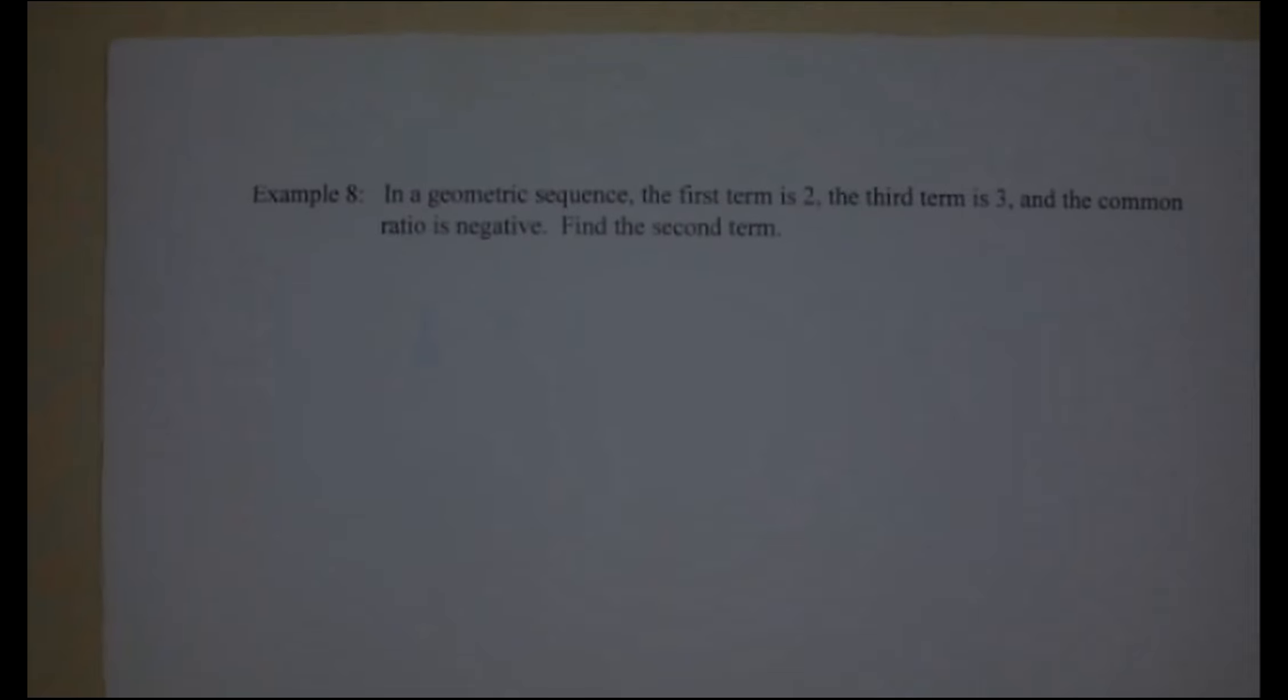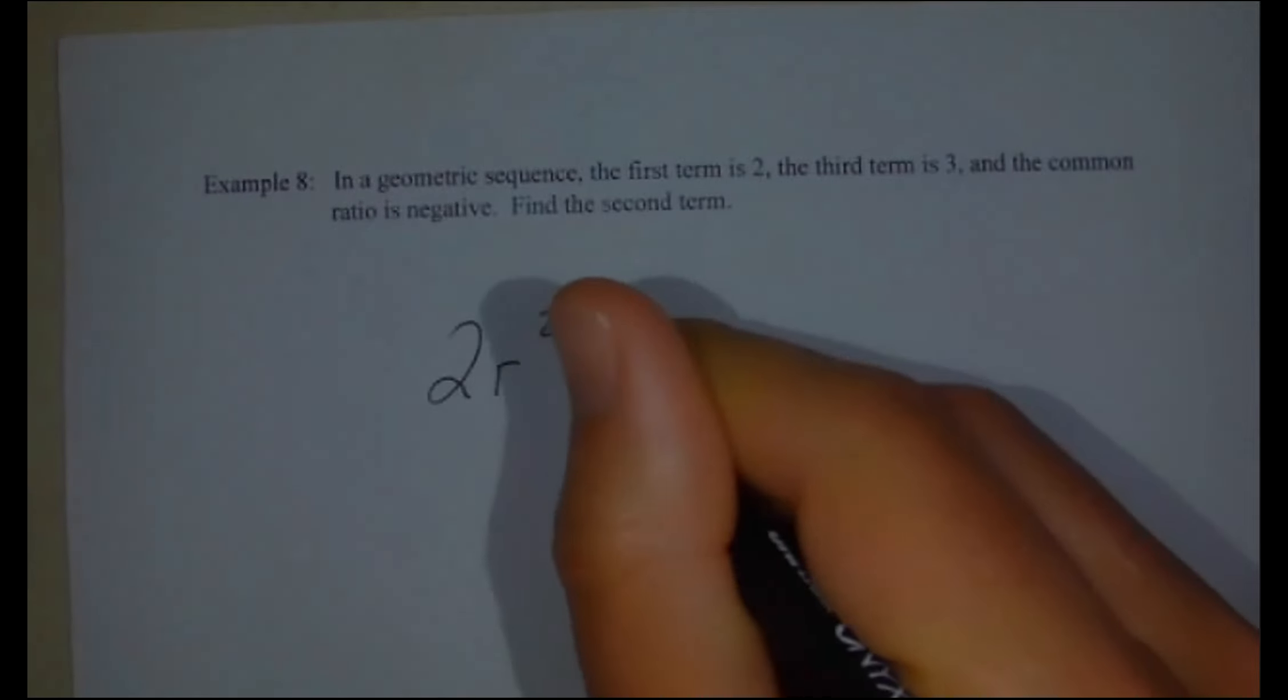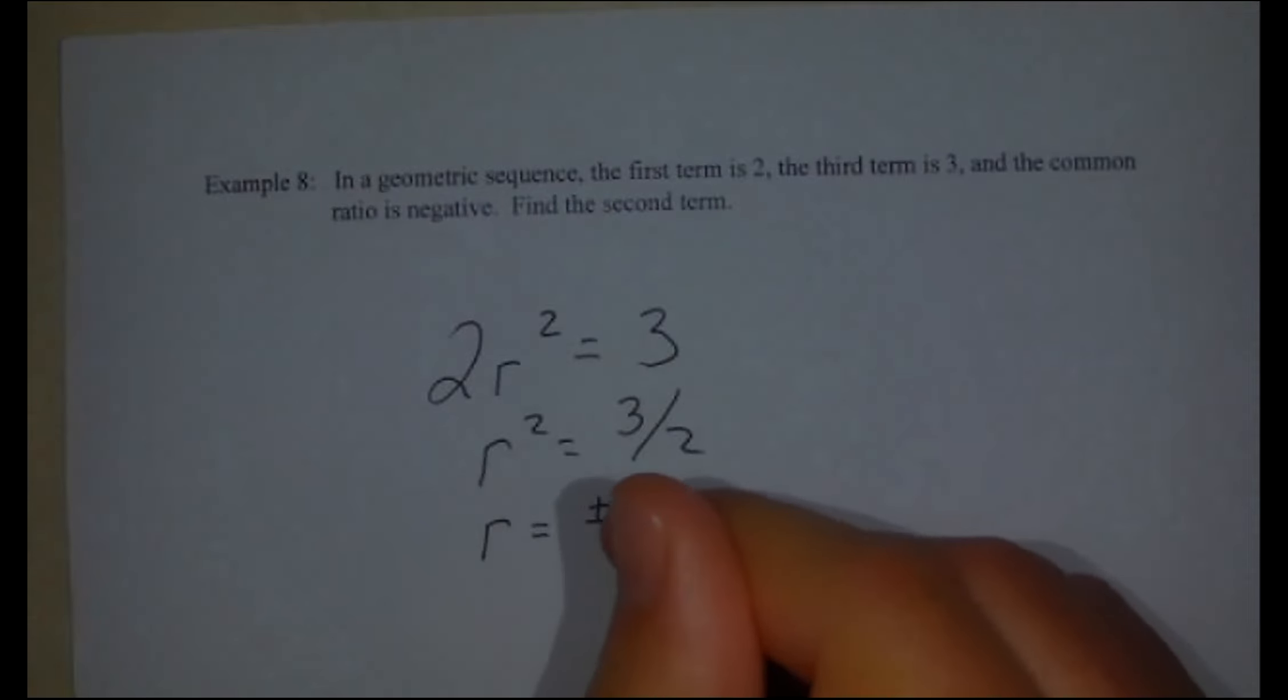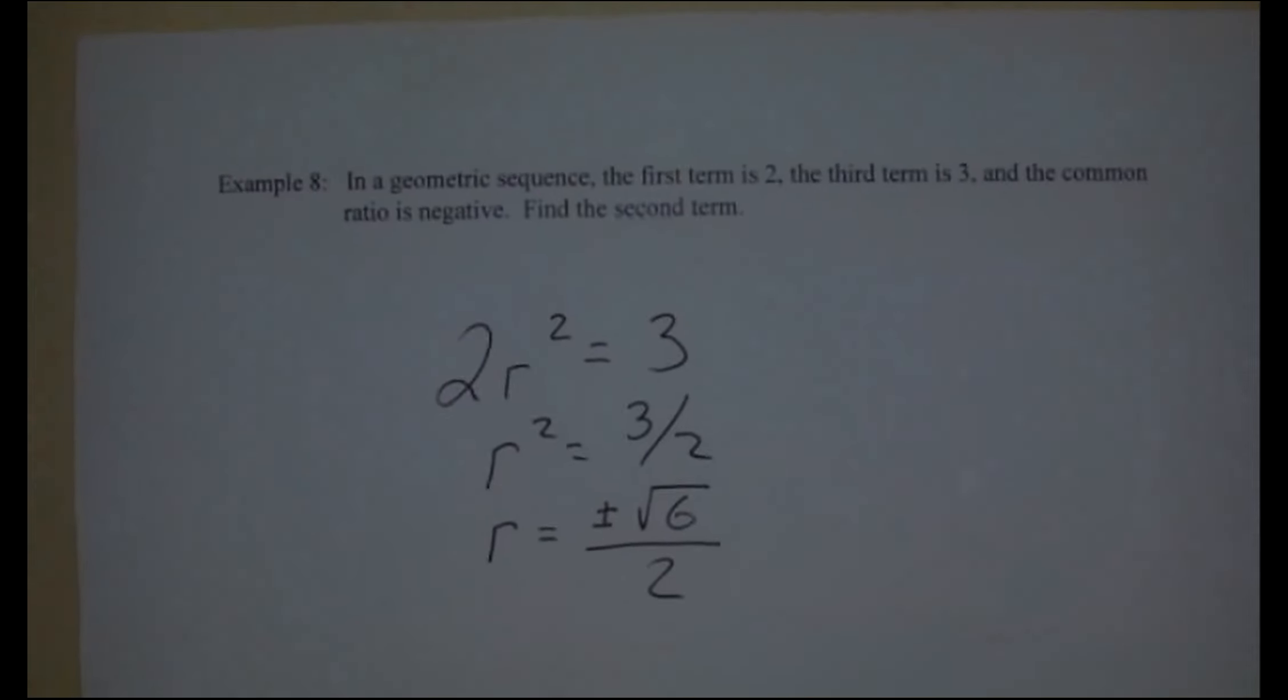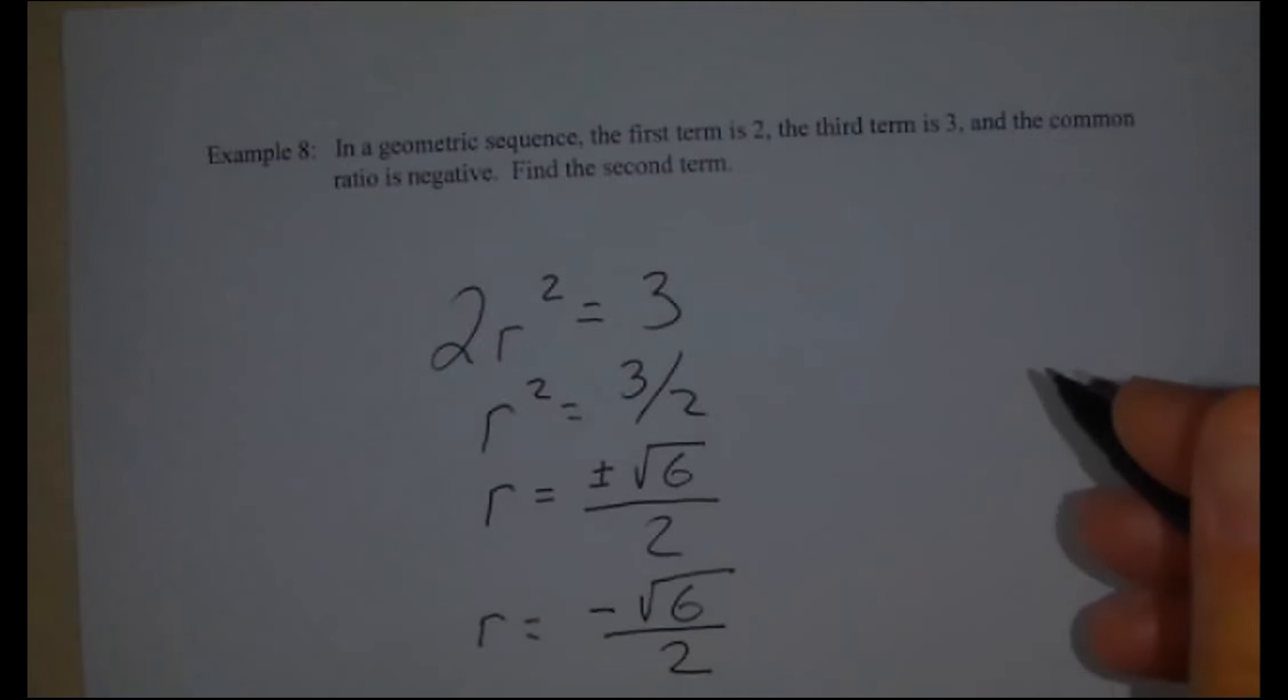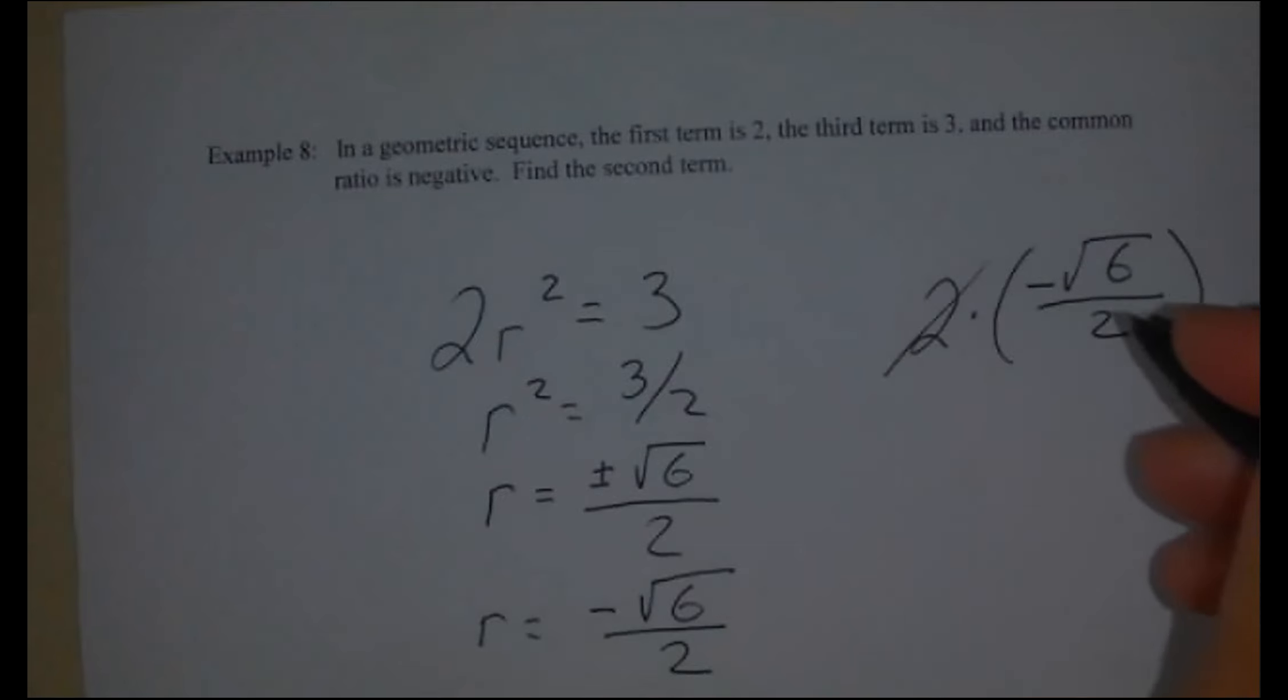In a geometric sequence, the first term is two and the third term is three. The common ratio is negative. Find the second term. Okay. So, to get to the third term, I must have multiplied by r squared. So two r squared equals three. r squared equals three over two. And r equals plus or minus root six over two. Does that look legitimate? Of course they tell me it's negative. So we now know that r equals negative root six over two. Find the second term. The second term should just be root six, it looks like. So the second term would be my first term times that negative root six over two business. The twos cancel out. And a sub two equals negative root six.